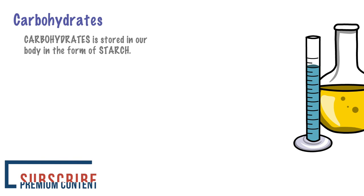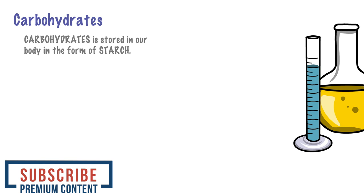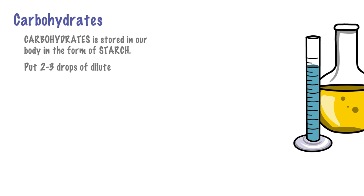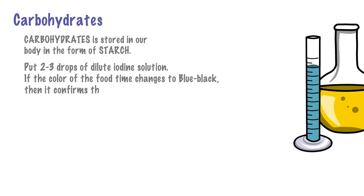There are also other various types of carbohydrates apart from starch and sugar. Take any food item of your choice. Now use the iodine solution that we have already prepared. Put 2 to 3 drops of the solution using the dropper and wait for some time to notice any change in the color of the food item. If it turns bluish black, then we know that starch is present.